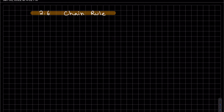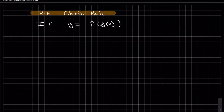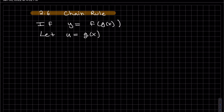So this is the chain rule. It's taking derivatives of functions that are compositions. You can see this is a composition of two functions f and g — this is just in general. Let u be our inside function.